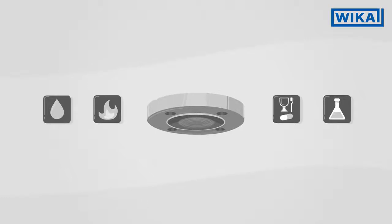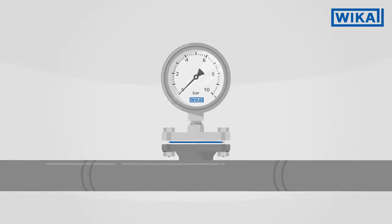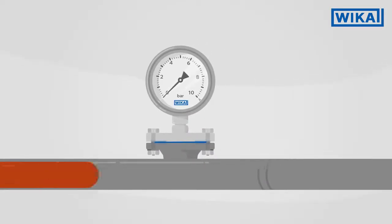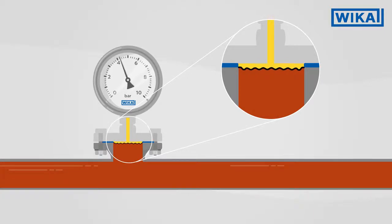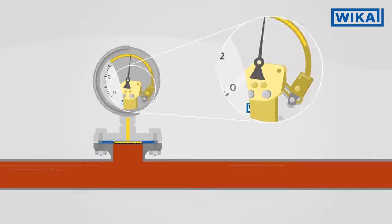The function is always identical in both cases. The diaphragm seals separate the medium from the measuring instrument with the aid of a fill fluid. Inside the diaphragm seal, the pressure is transmitted to the measuring instrument.